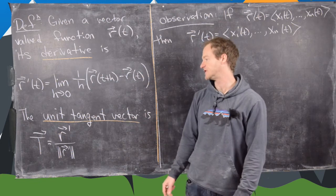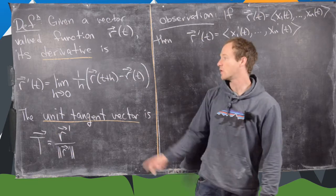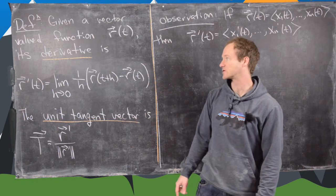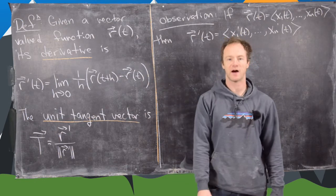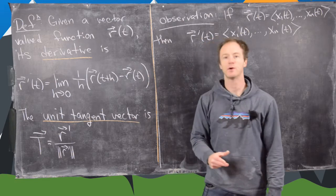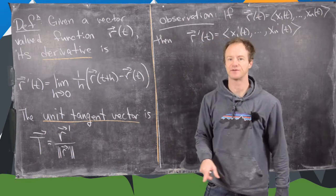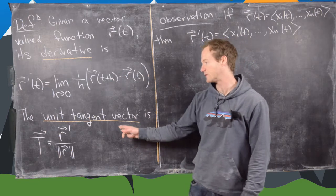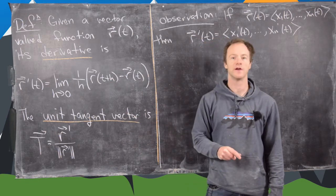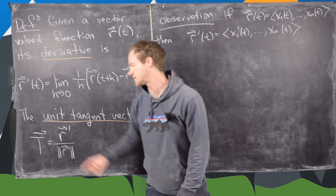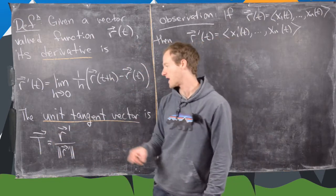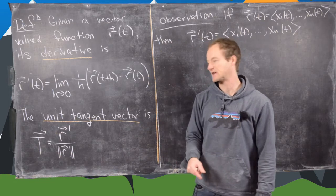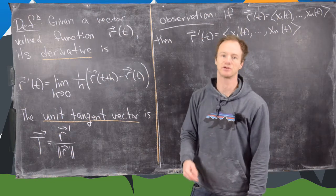Another important notion is the unit tangent vector. If r prime is not equal to 0, it's called a tangent vector of the curve defined by this function. Often we want to know the direction of that tangent vector more than its magnitude, so we turn it into a unit vector. This gives us the unit tangent vector, denoted by capital T, and it's given by r prime over the magnitude of r prime. Notice that sets the magnitude of capital T equal to 1.